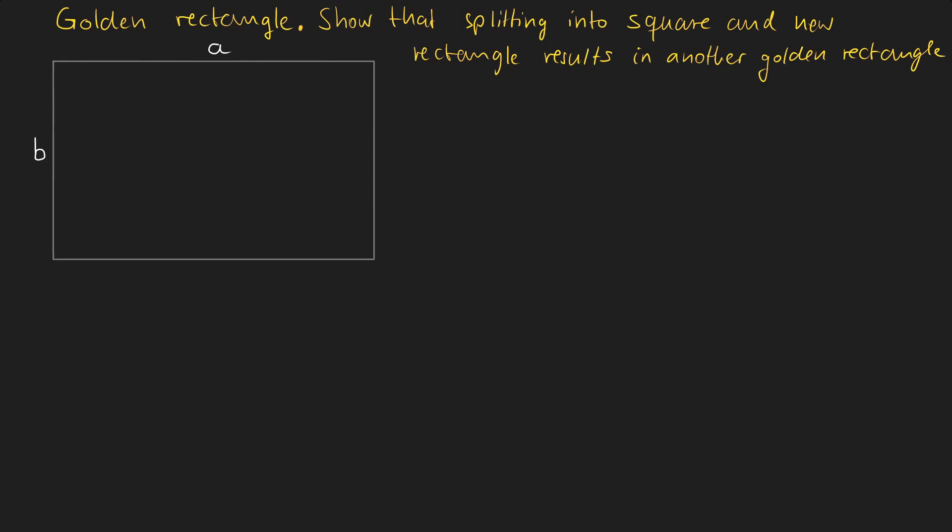From the exercise we have given a golden rectangle. We need to split this rectangle into a square and another rectangle. The task then is to show that this new rectangle is also a golden rectangle.